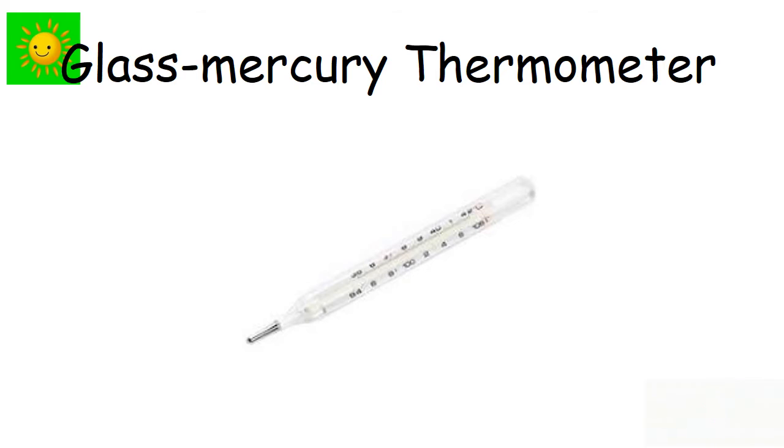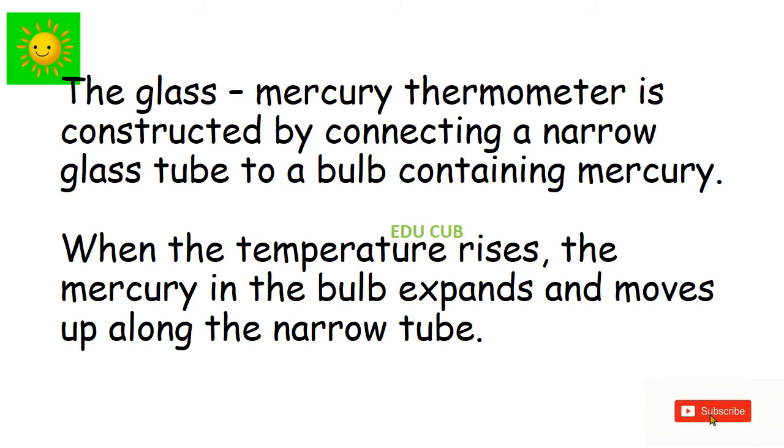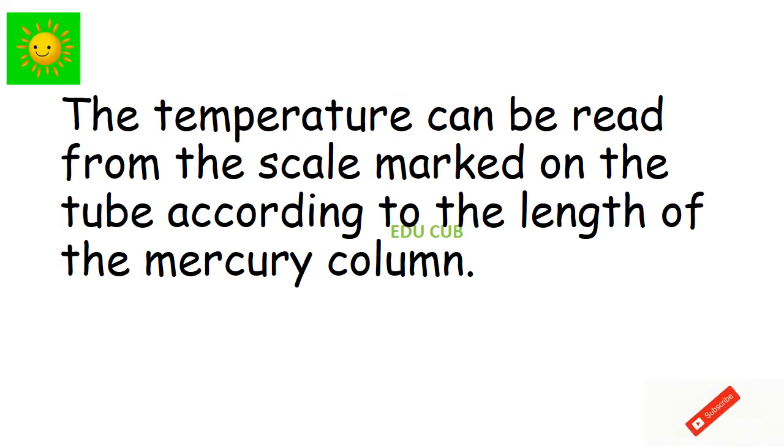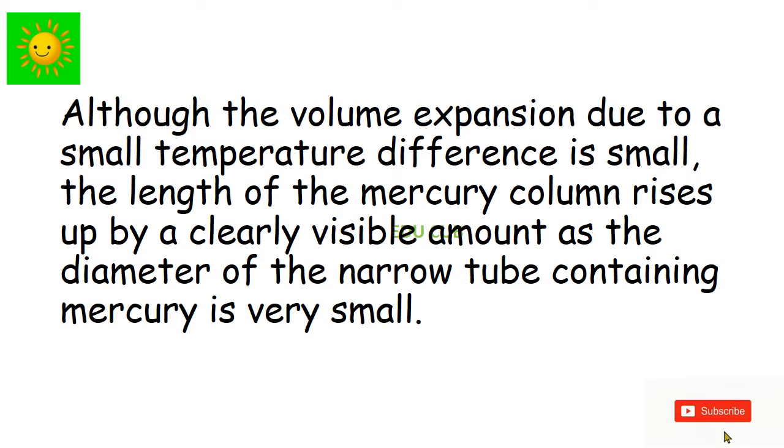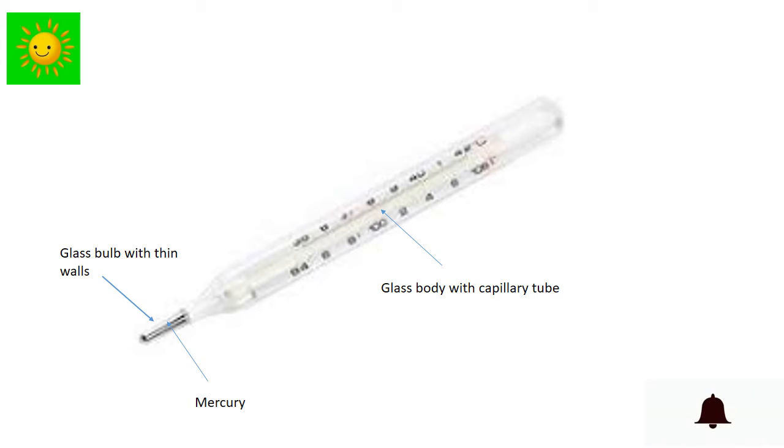The glass mercury thermometer is constructed by connecting a narrow glass tube to a bulb containing mercury. When the temperature rises, the mercury in the bulb expands and moves up along the narrow tube. The temperature can be read from the scale marked on the tube according to the length of the mercury column. Although the volume expansion due to a small temperature difference is small, the length of the mercury column rises up by a clearly visible amount as the diameter of the narrow tube containing mercury is very small.